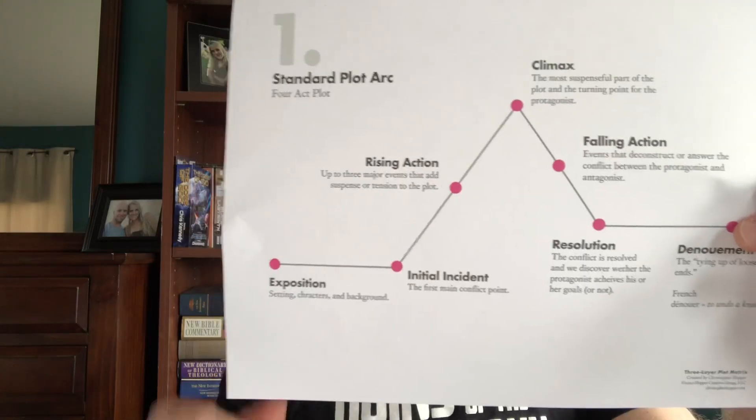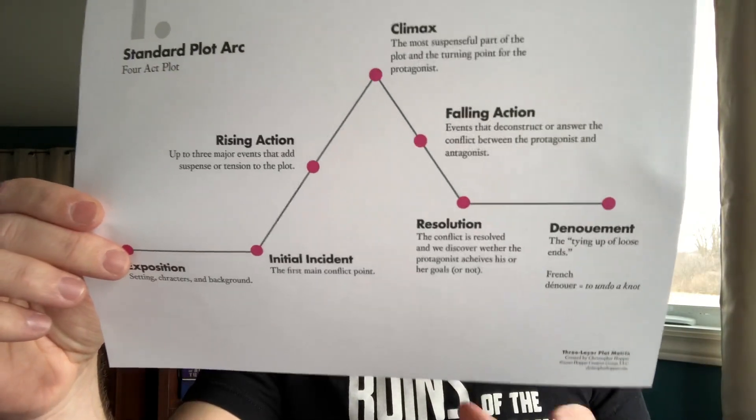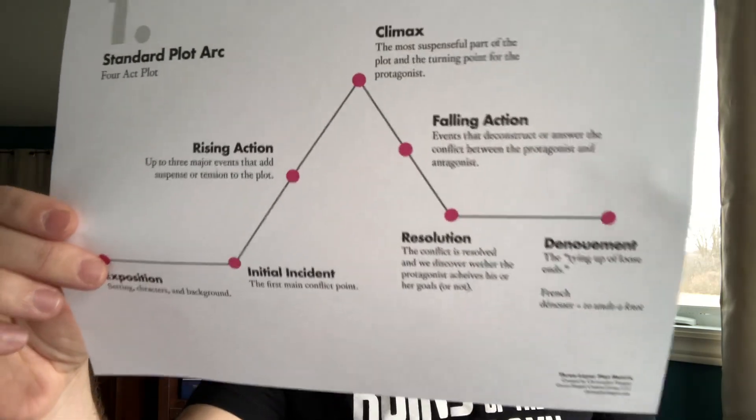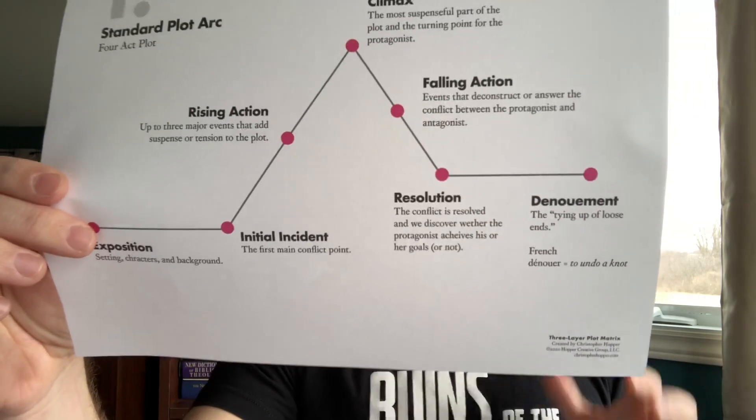At the top, you have the climax, which is the most suspenseful part of the plot and also the turning point for the protagonist. This is where the whole story pivots and starts leaning toward the end resolution. We have the falling action — events that deconstruct or answer the conflict between the protagonist and the antagonist — and then the resolution, which is the conflict being resolved. We discover whether or not the protagonist was successful in his or her goals. Not every story has to have a happy ending; there can be tragedies, and sometimes your stories help relate people to issues in their lives that aren't great, and they can find catharsis in that.